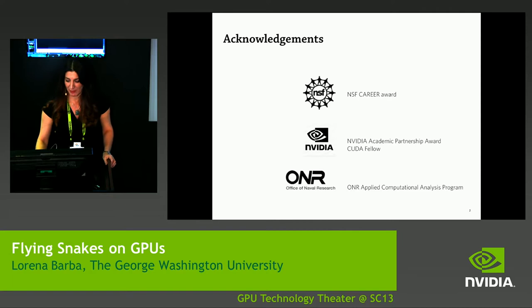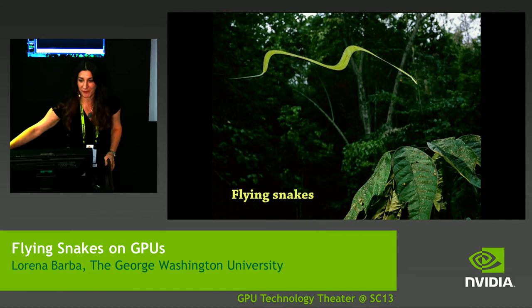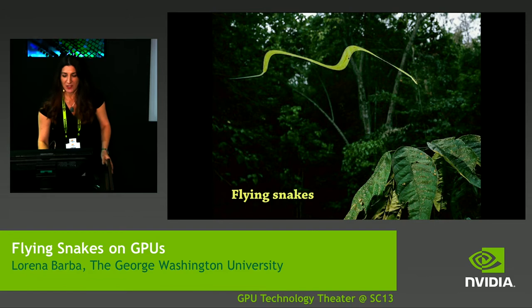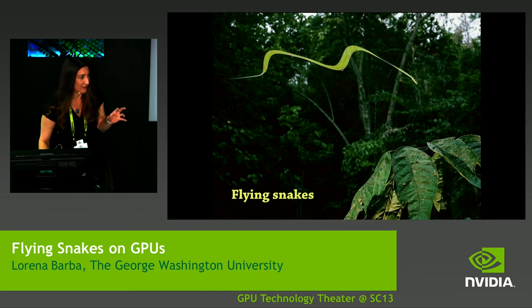So, flying snakes. Here is a picture — as you can see, this looks like a rather flat body for a snake, right? Snakes are all cylindrical. But these guys are pretty funny because when they fly, they flatten out.